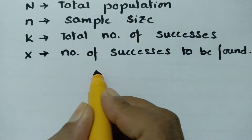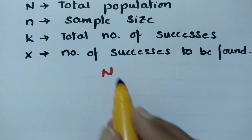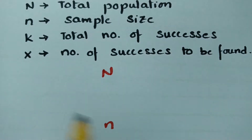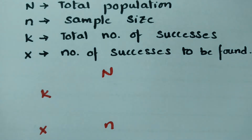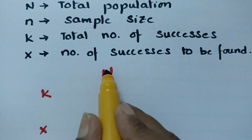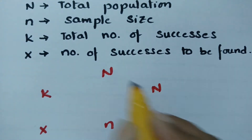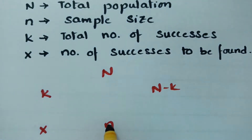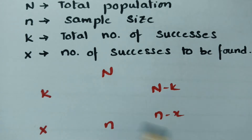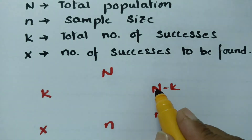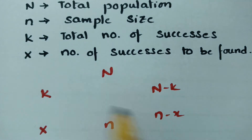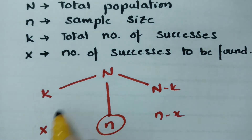Here, capital N is the total population and small n is the sample size. K is the number of successes and x is the number of successes to be chosen. We subtract K from N and x from n, so each term pairs as: K with x, and (N-K) with (n-x). This is how we remember each term in the formula.